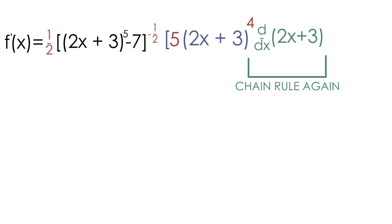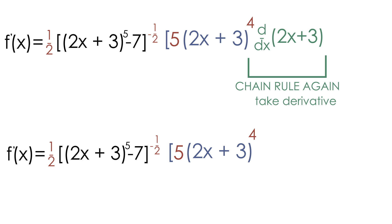This can still be simplified further. We still need to take the derivative of 2x plus 3 from the second time we did the chain rule. The derivative of 2x is just 2, and the derivative of 3 is 0, so this is just equal to 2.